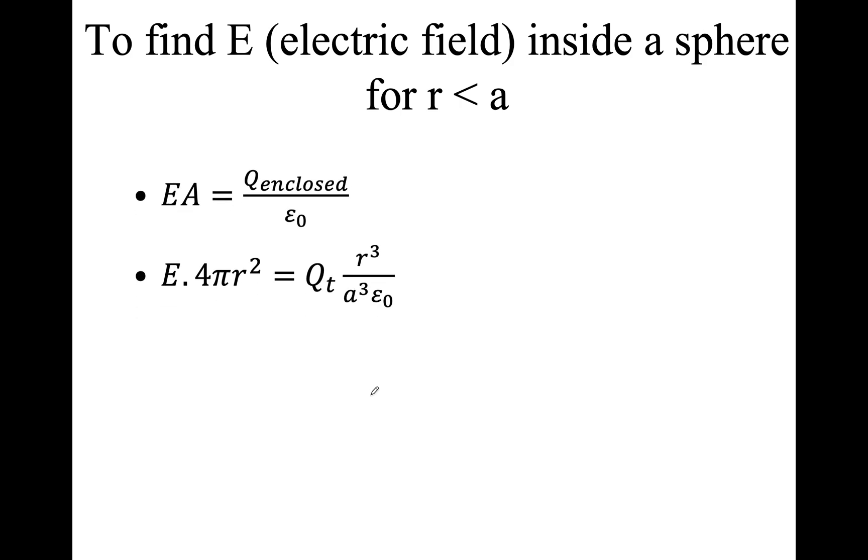EA equals Q over epsilon naught. So we know E, that's just the electric field. A is the area, four pi R squared. And Q over epsilon naught, I'll replace Q with what we just did, which is Q total R cubed over a cubed. And at the bottom we'll keep the epsilon naught. Cancel out some of the R's. R squared. We'll take these two over to the other side and that will give me this little formula there. And shuffle it around and you will see that this becomes K again. And now we have Q R over a cubed. That is the formula for inside the sphere.